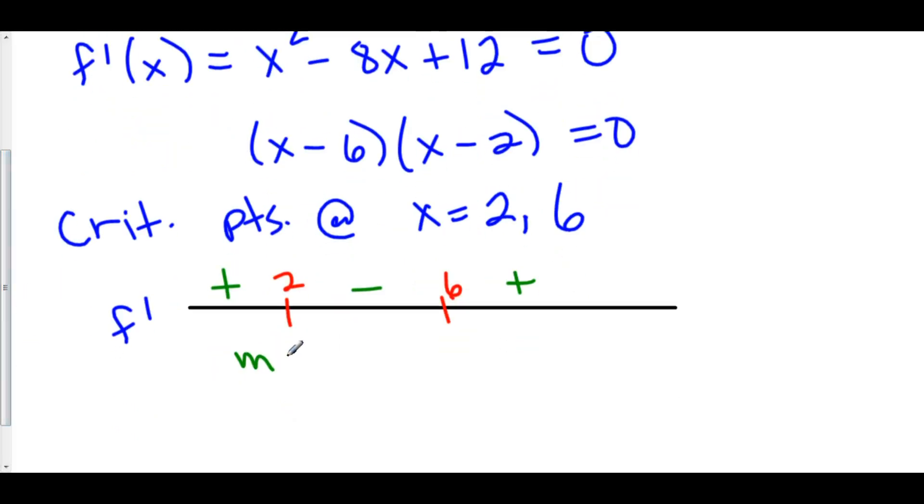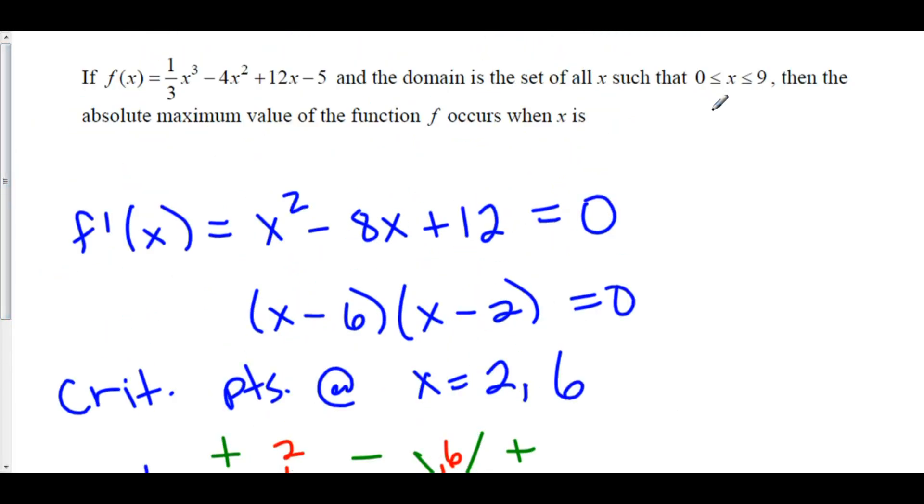So we have a relative max at x = 2 and a relative min at x = 6. So we're going to throw 6 away because that's a min, we don't really care about that. We just want to find the absolute max of this function from 0 to 9. We know that there's a relative max at x = 2. However, we also have to check our endpoints, which are 0 and 9.